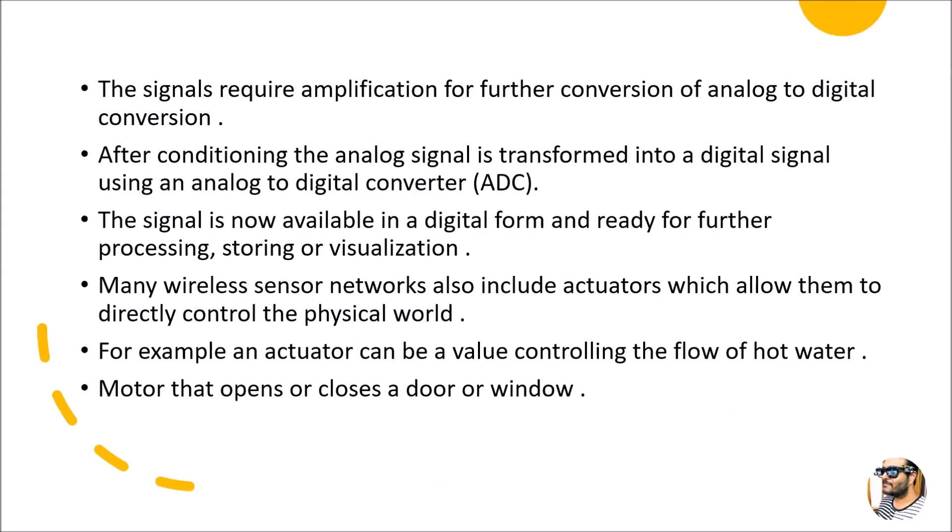These signals require amplification, as already mentioned. Conditioning amplifies the signals for further conversion — analog to digital or digital to analog. Once the signal has been conditioned, it is given to the actuators in order to obtain some sort of output.